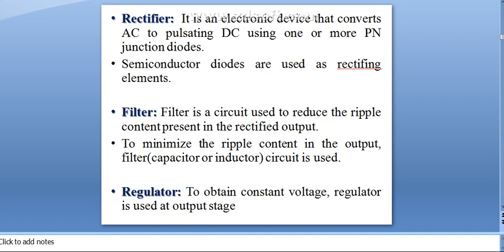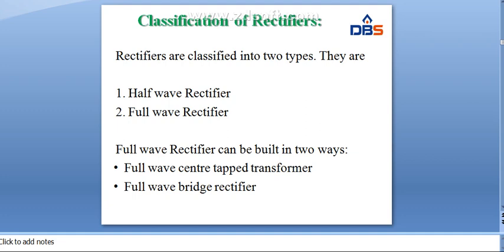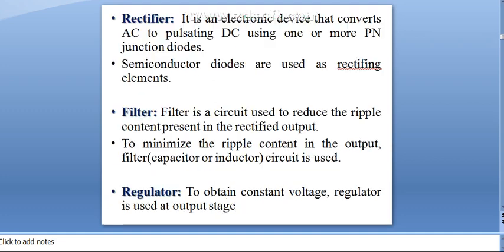In the filter circuit, we can use a capacitor filter or an inductor filter. Next, the output of the filter is applied to the regulator. To get a constant voltage, a regulator is used in the output stage. That is the block diagram of the regulated power supply.